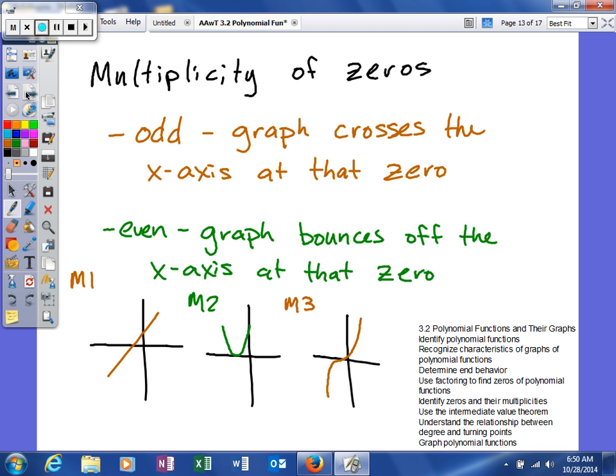If there's an even multiplicity, the graph bounces off the x-axis at that zero. So if you look at this example right here, where we have a multiplicity of one, as you can see, it just crosses at the zero.